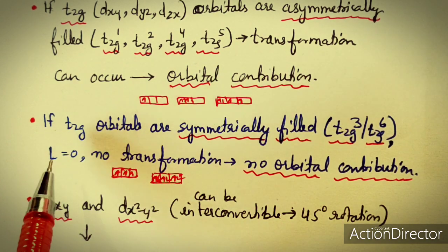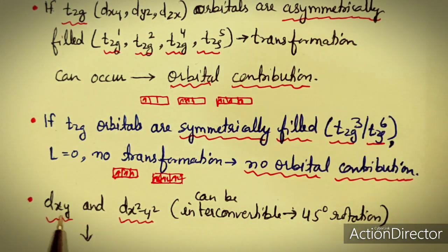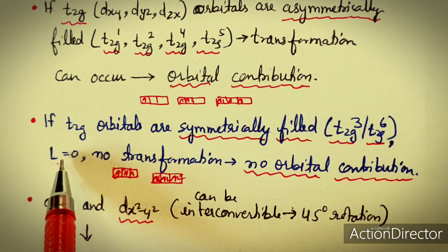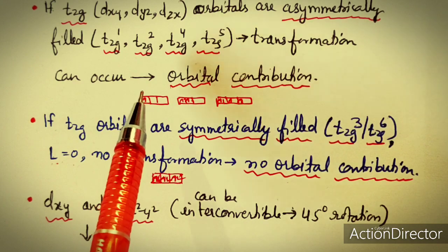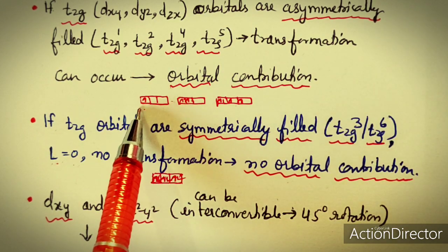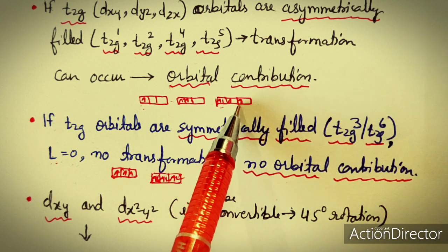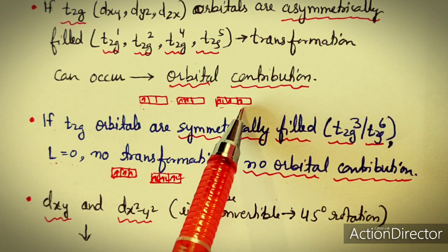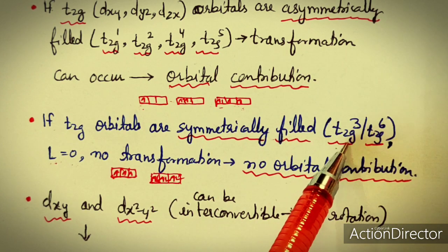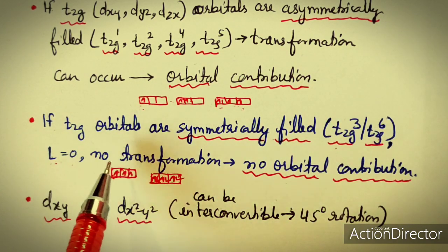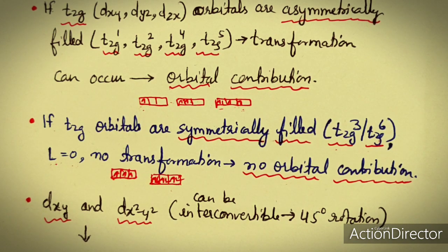When T2g is symmetrically filled, L equals zero because electrons are present in each orbital with +1, 0, and -1 values, so L becomes zero and there is no orbital contribution. In asymmetrically filled cases, there is some non-zero L value, so there will be orbital contribution and possibility of transformation. For half-filled and fully filled T2g, L equals zero, so no interconversion can take place and no orbital contribution to the magnetic moment.